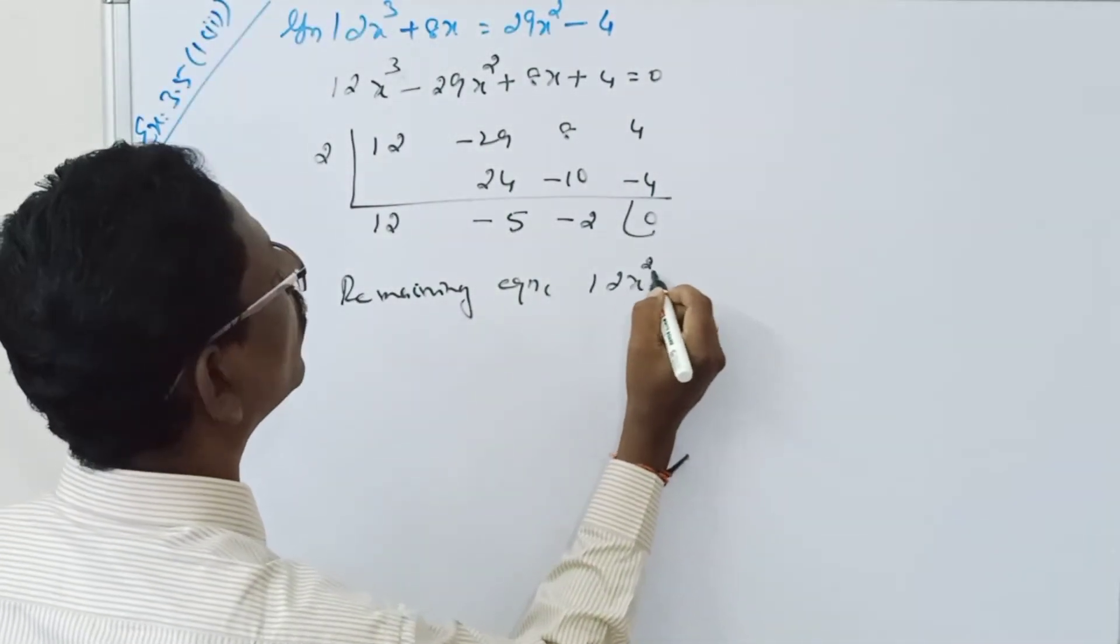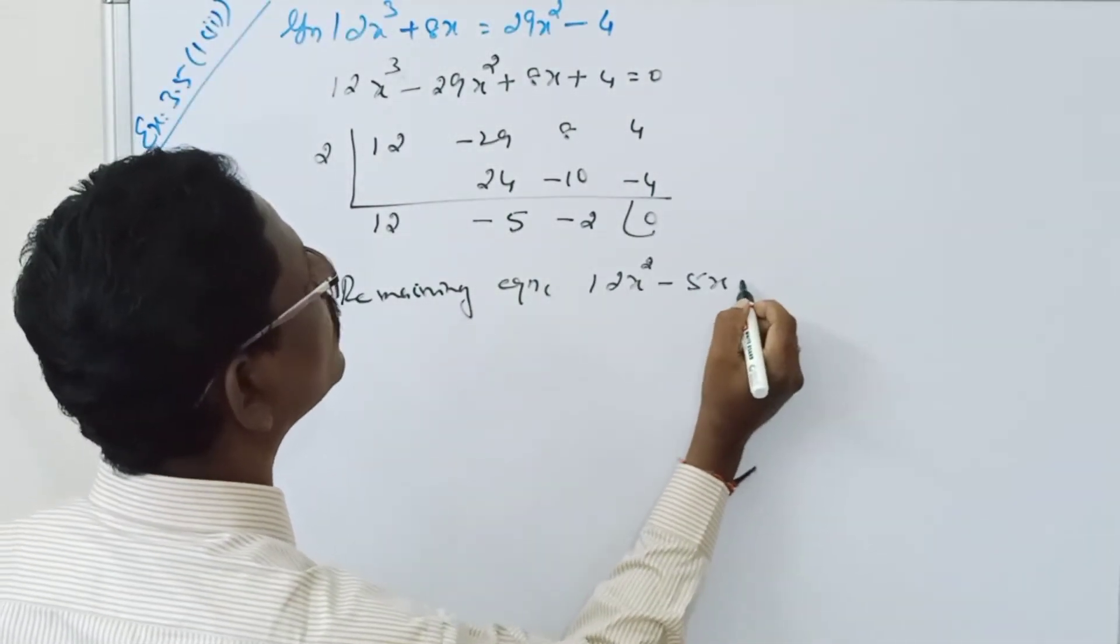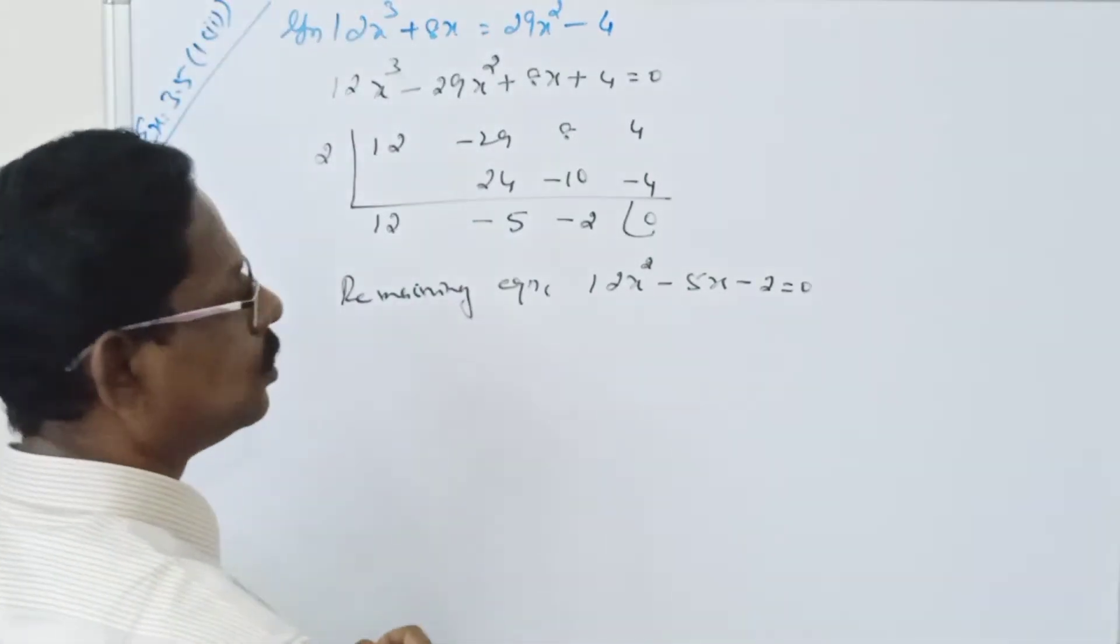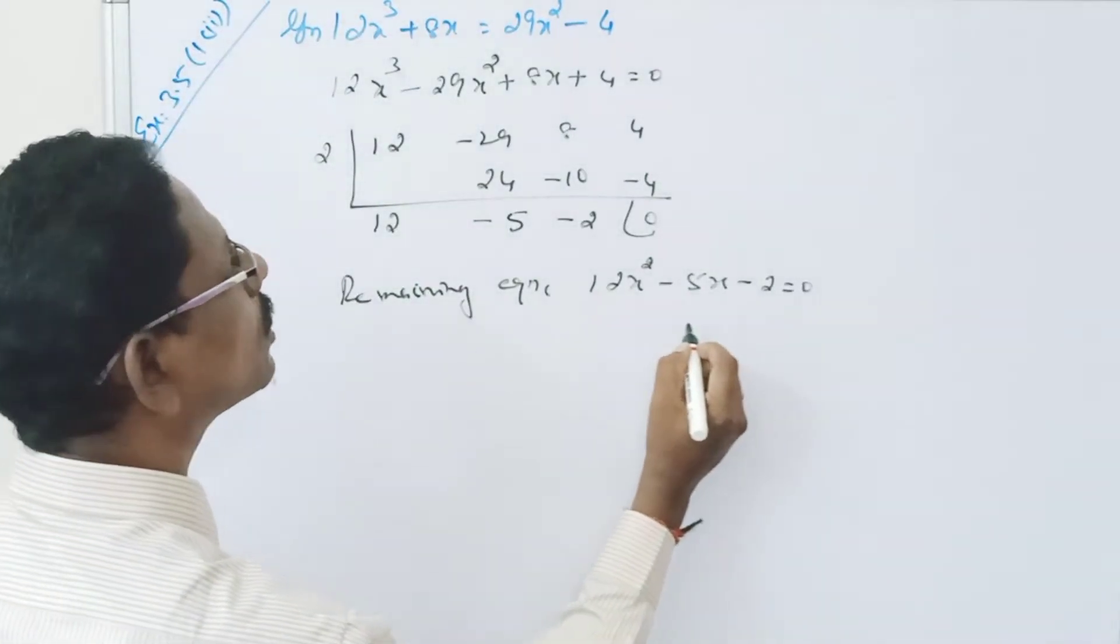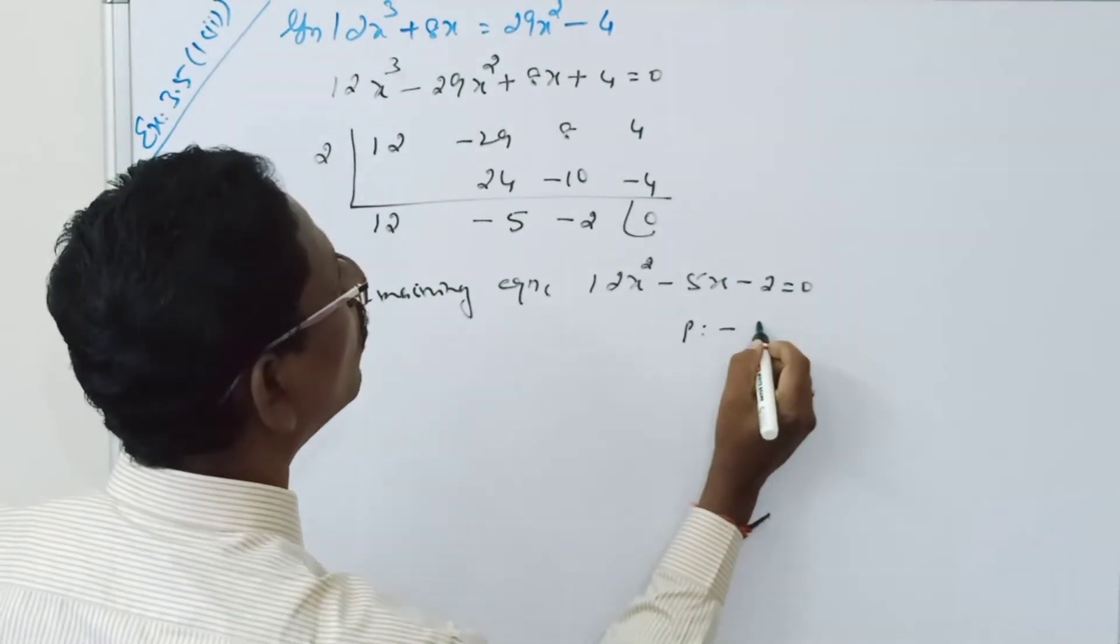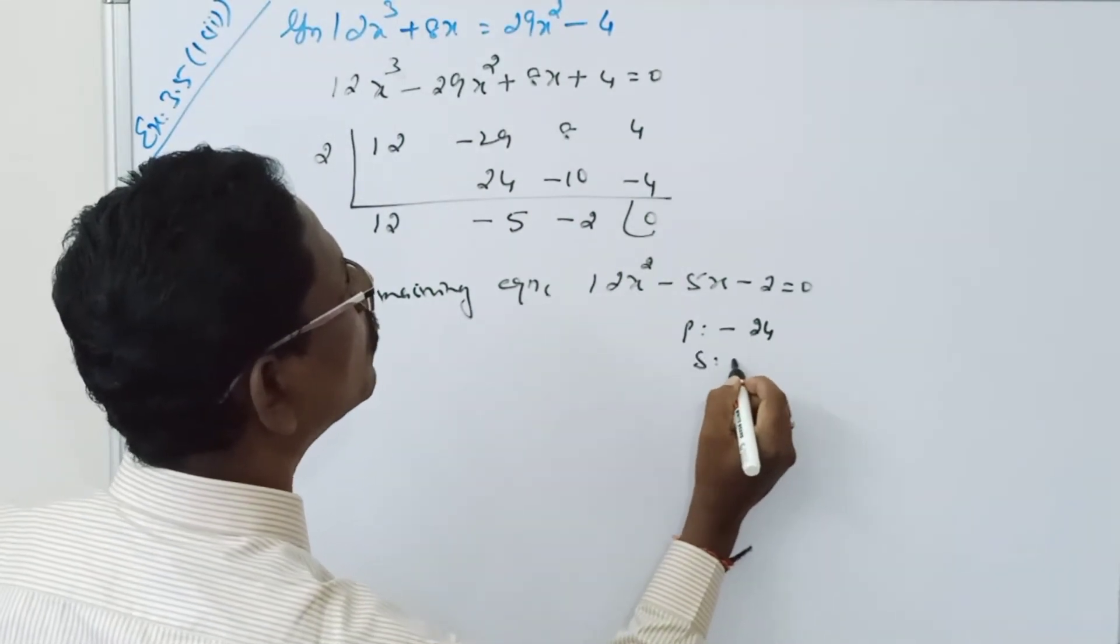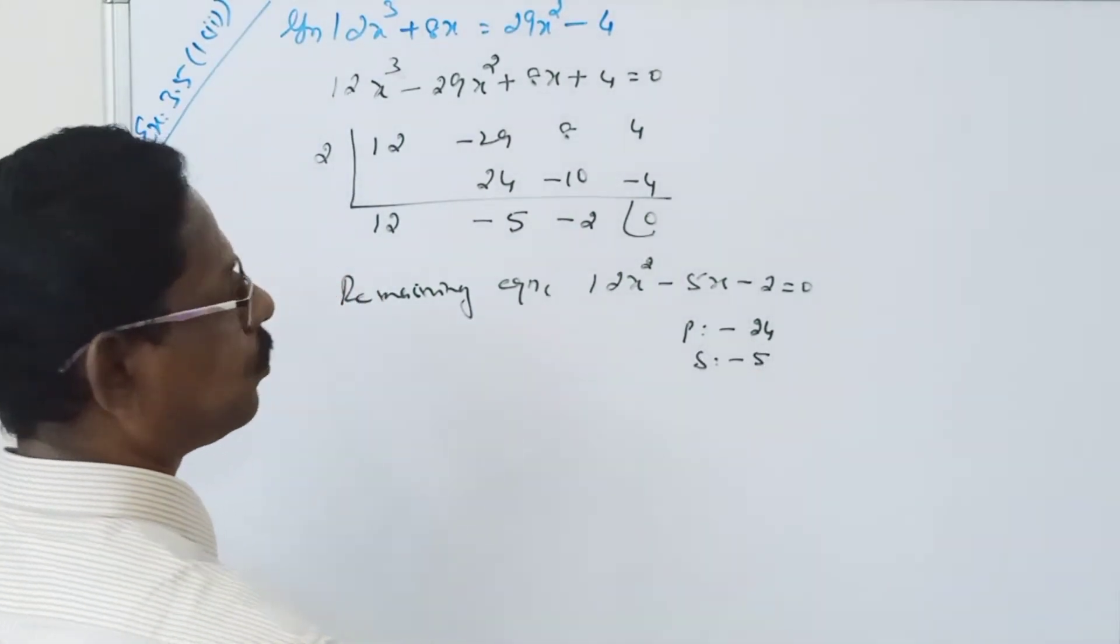12x square minus 5x minus 2 equal to 0. So the product is equal to minus 24, sum is equal to minus 5.